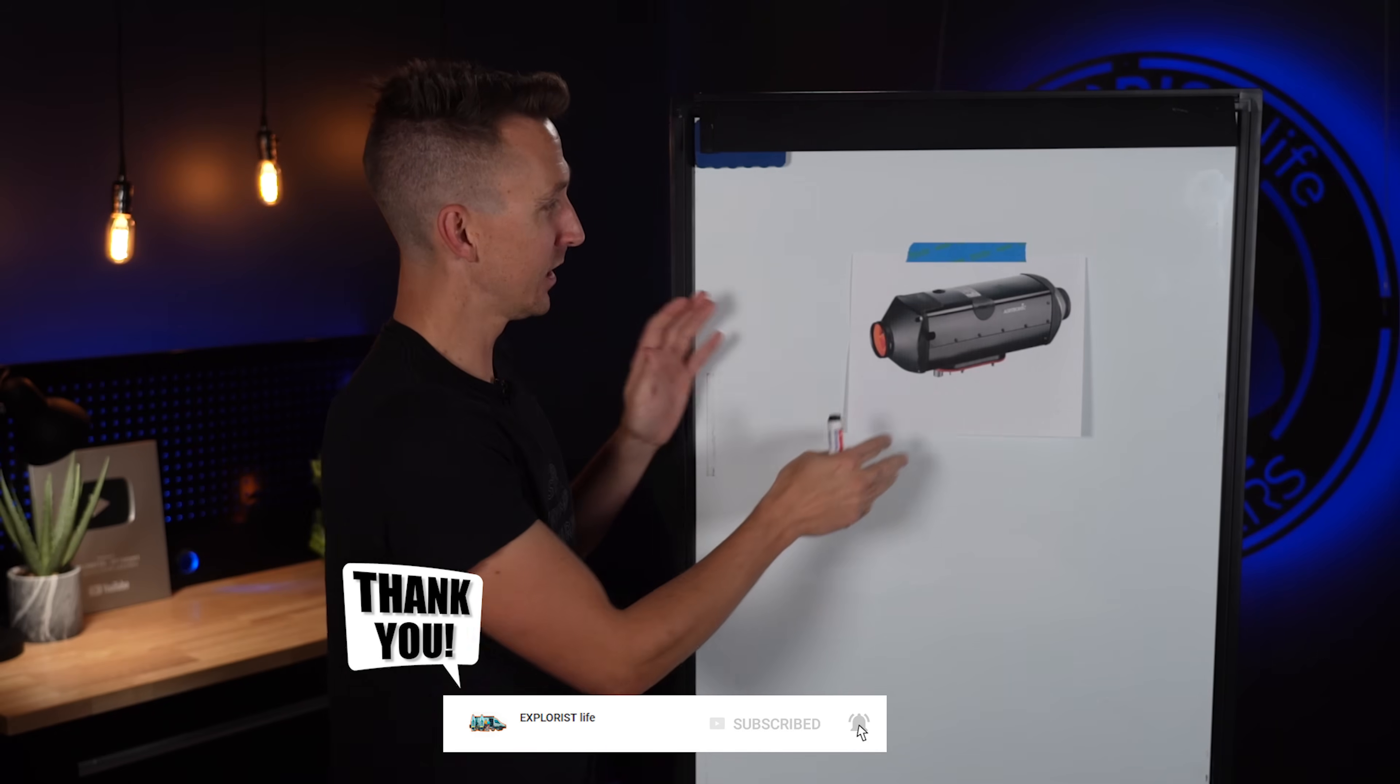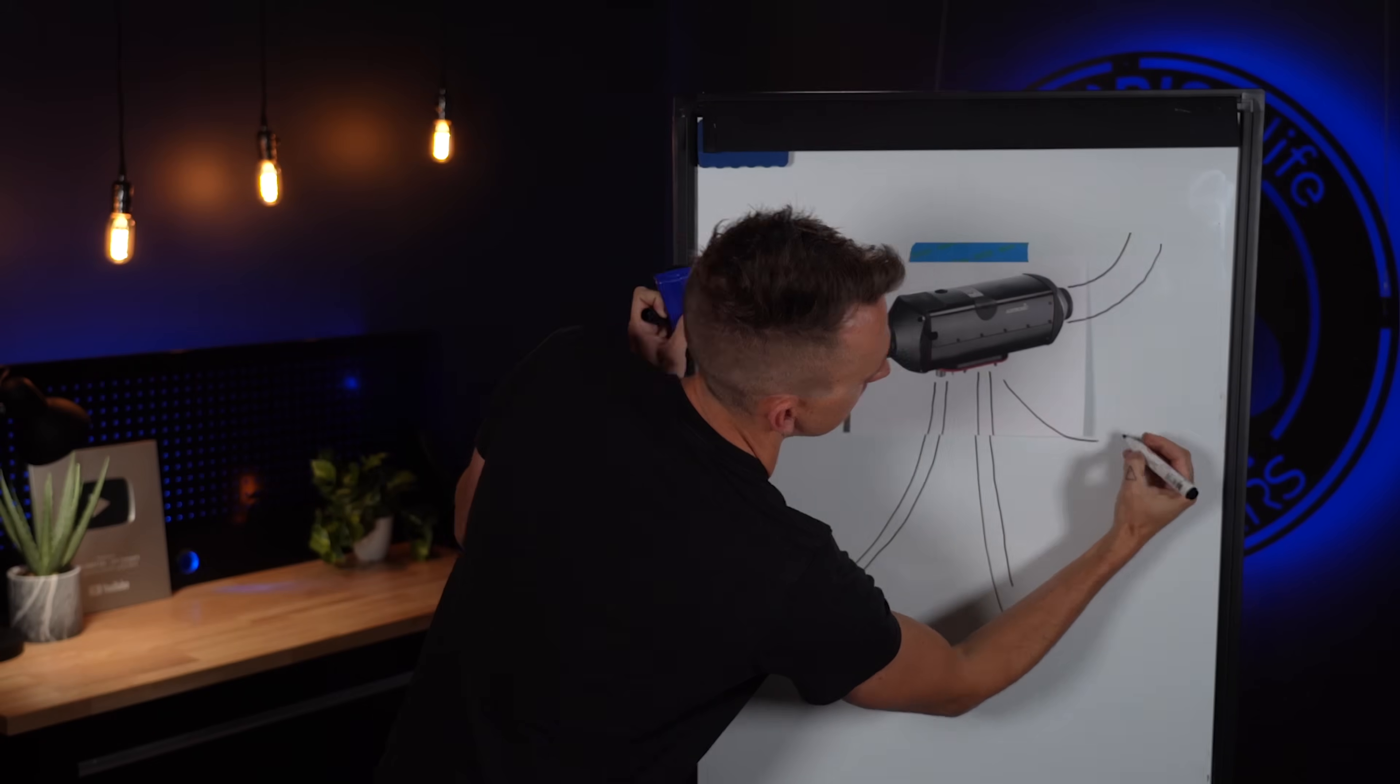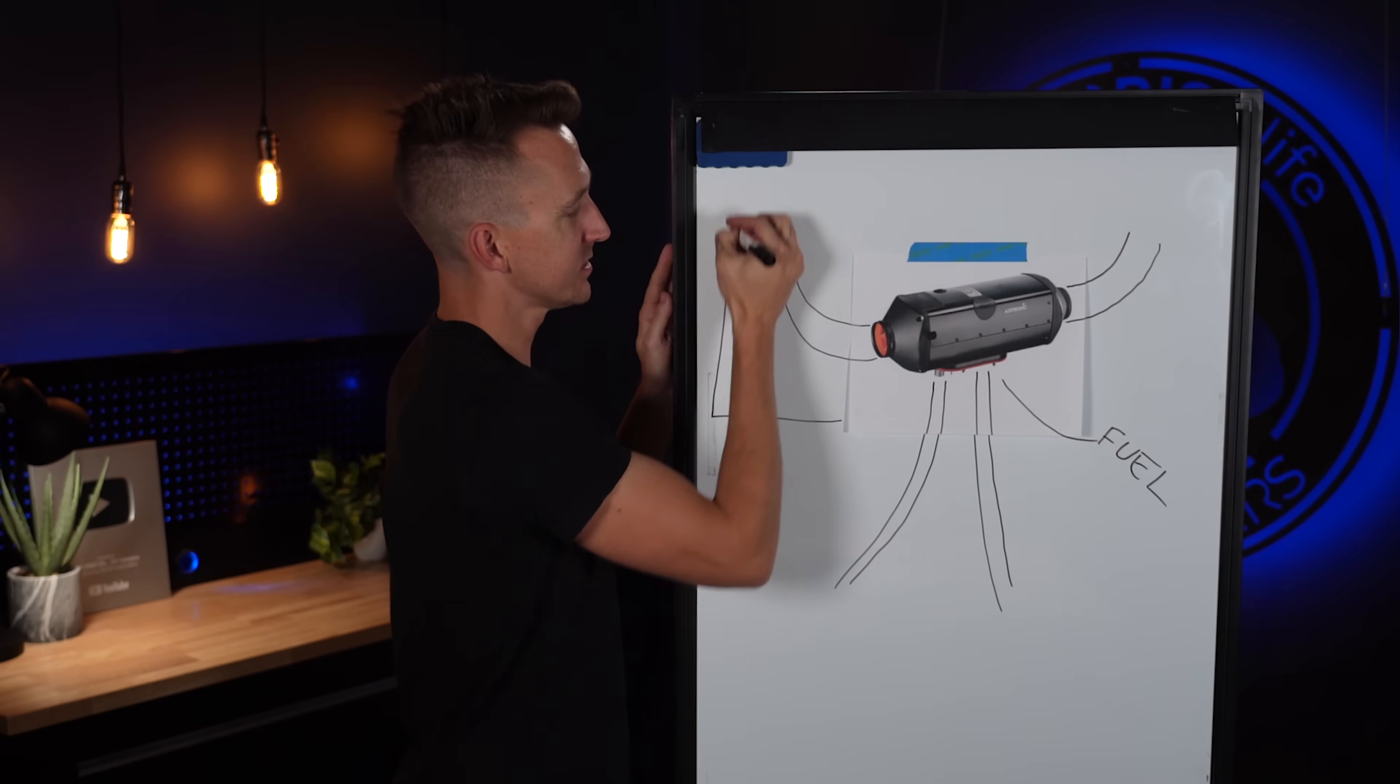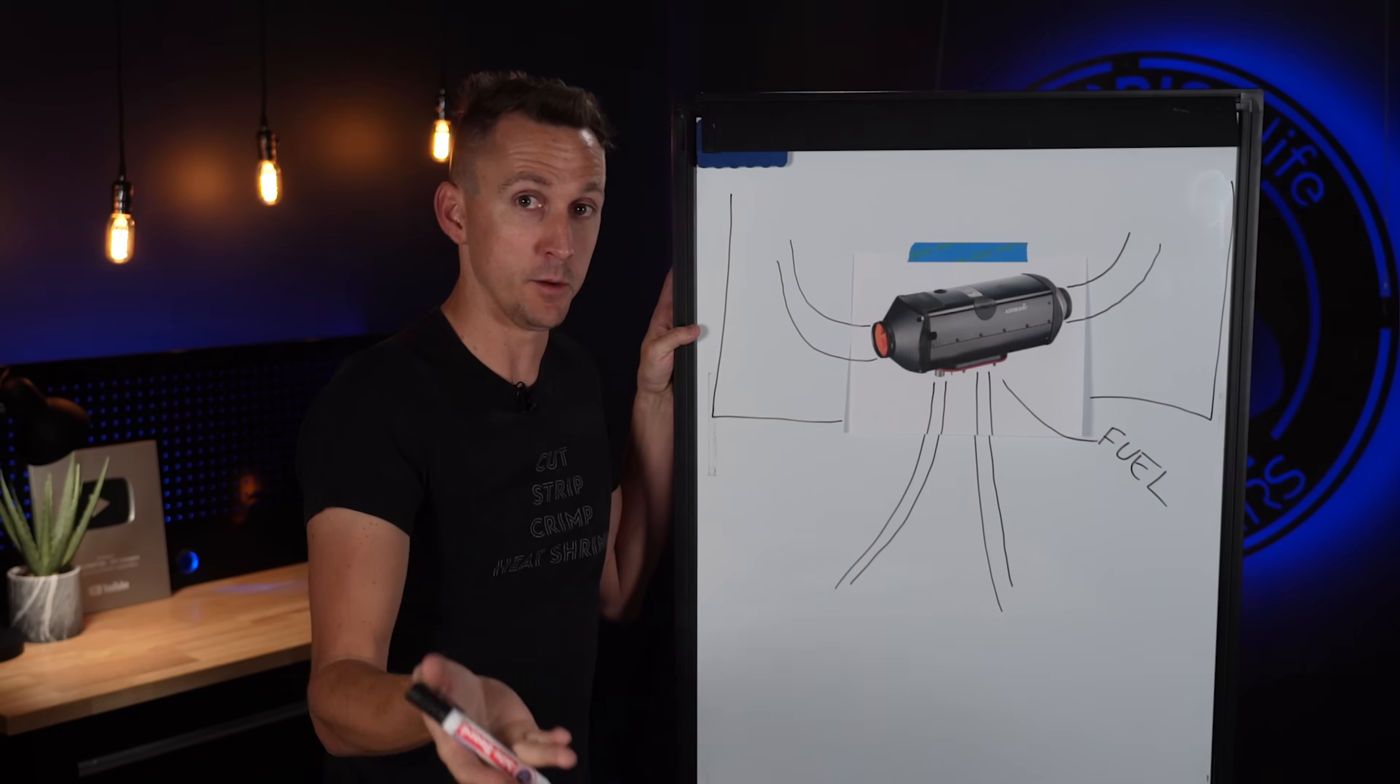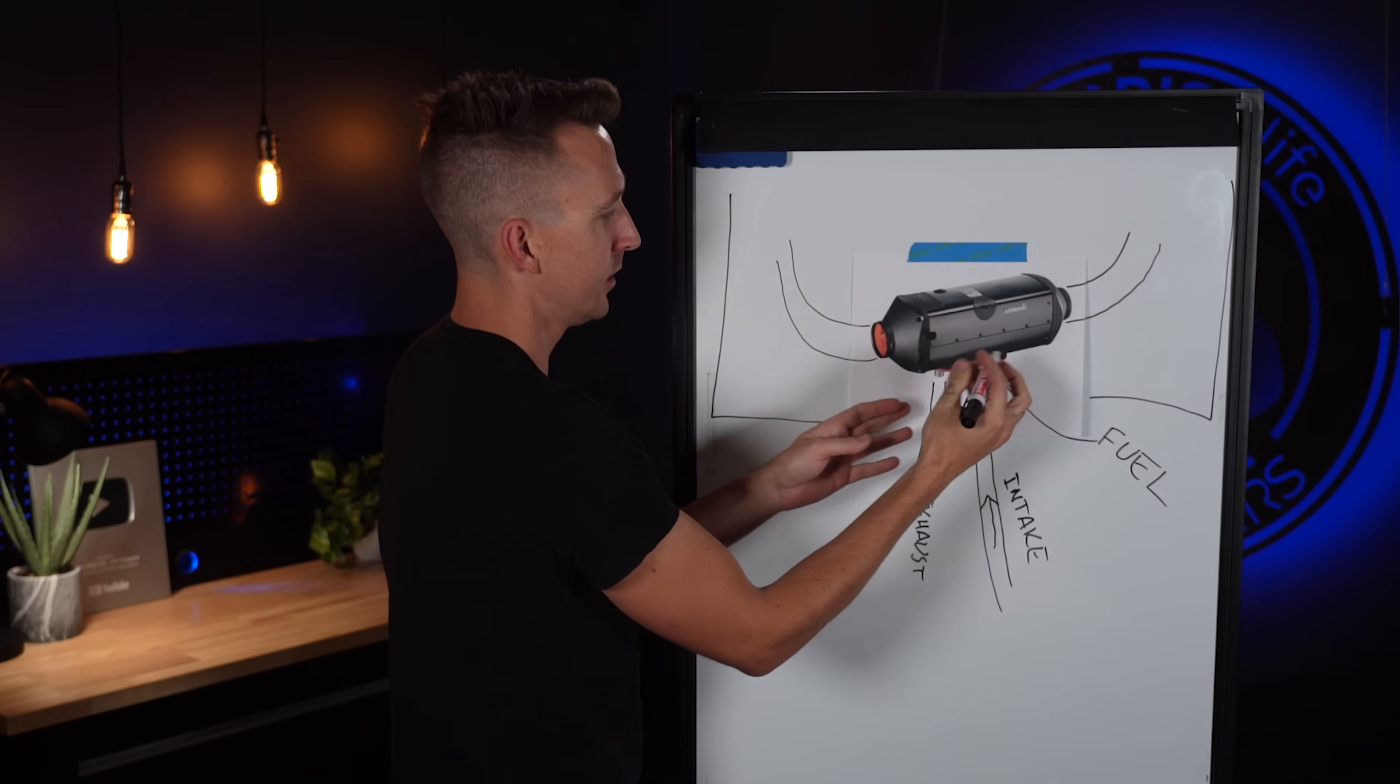For a fuel burning unit like the Wabasto or an eSpar heater here's how it works. For units like these we have four pipes one two three and four. These upper two are inside of the van and these lower two are underneath the van. Now the two that are underneath the van are the actual combustion chamber intake and exhaust.